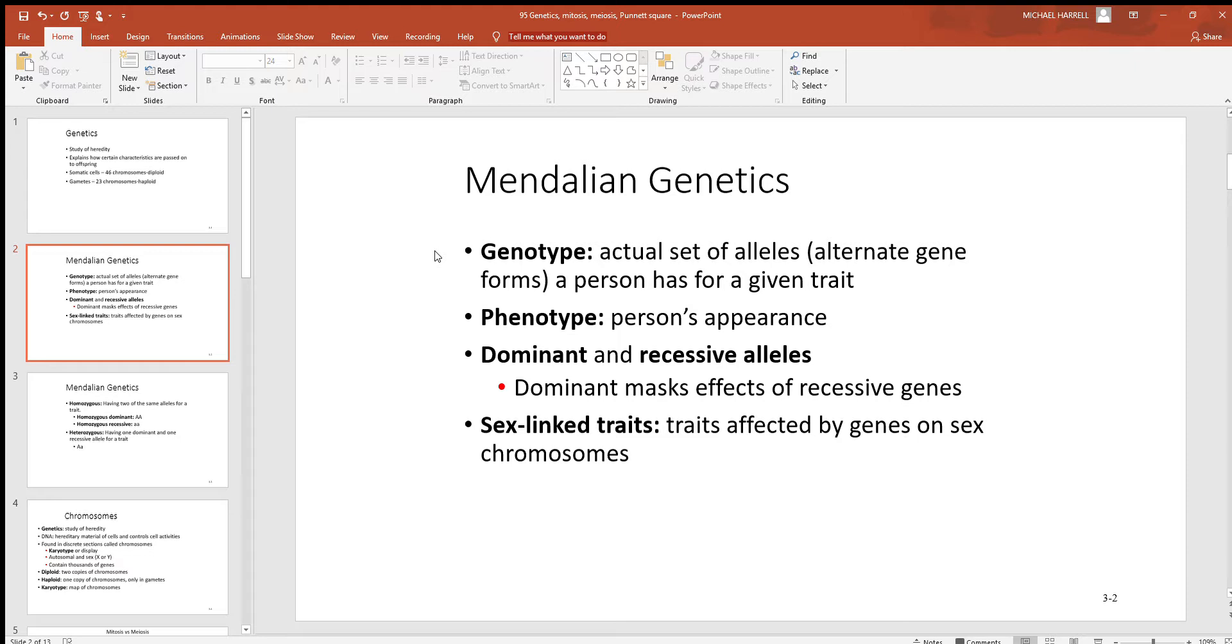If the genotype is the alleles needed for eye color, the phenotype would be green, blue, brown, or whatever that person's eye color is. You'll also hear about genes being categorized as dominant and recessive. Dominant genes are in general the good ones, the ones you do want to see expressed in the body, and they tend to override or mask the effects of recessive genes, which are generally undesirable.